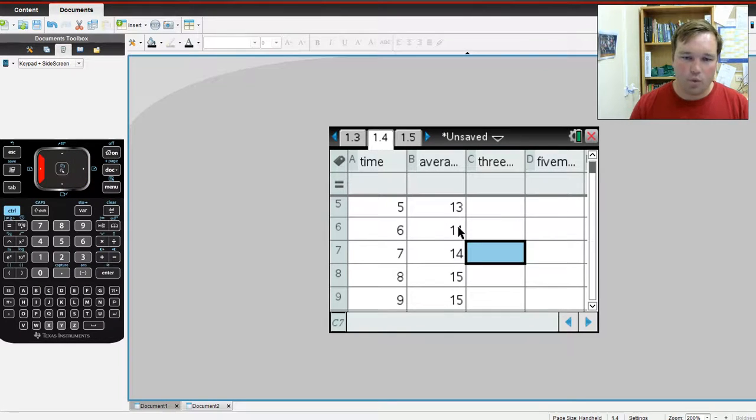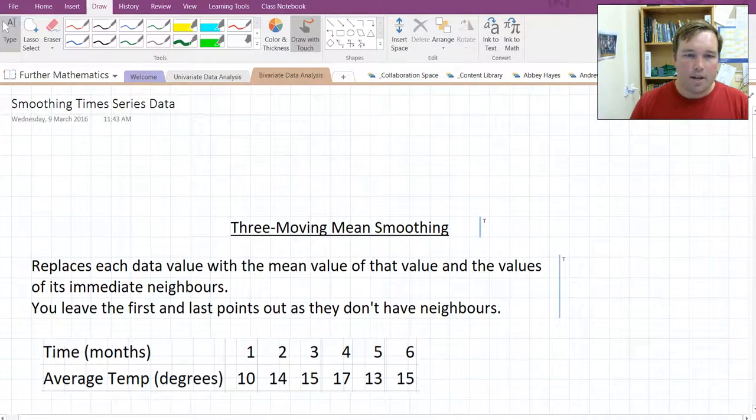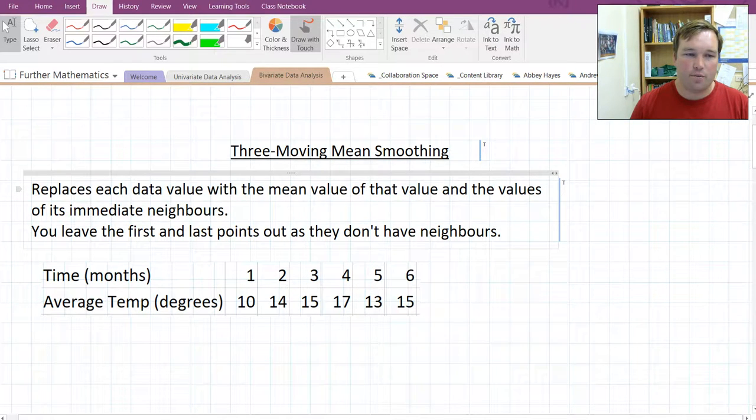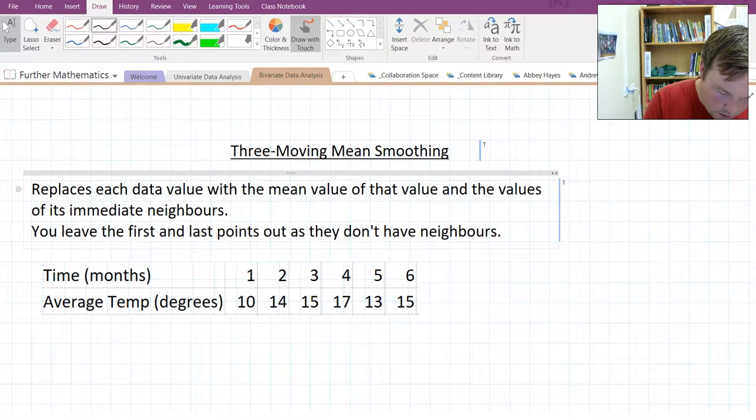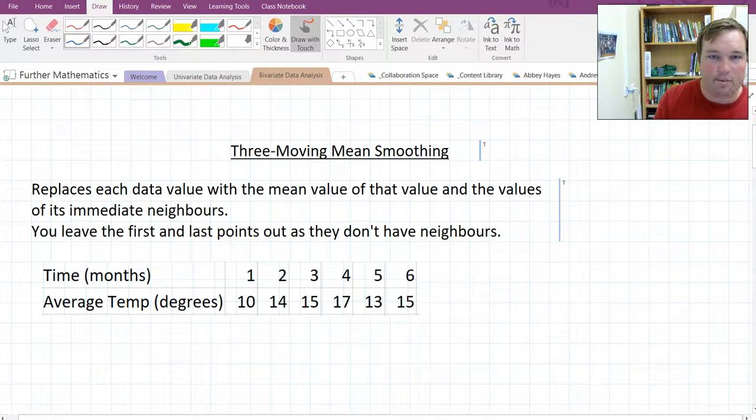So what we do is we go to here, three mean smoothing. This is the most basic type of smoothing. What it does is we replace each data value with that value and its values immediate neighbours as a mean. So here, we're going to leave time one alone because it has no neighbour to one side. So we ignore it. But here, for us, we'll go three mean.